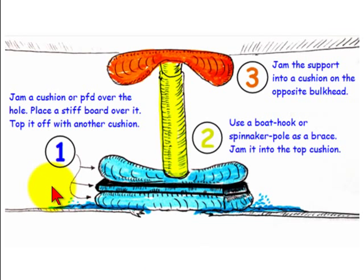Illustration number one shows how to create a strong patch against the hole in your hull. First thing you want to do is jam a cushion or PFD against the hull, place a strong board such as a hatch board on top of that cushion, and then place a second cushion on top of the board.